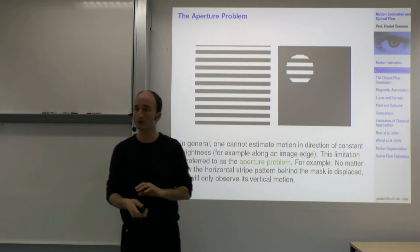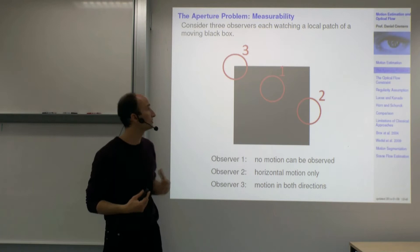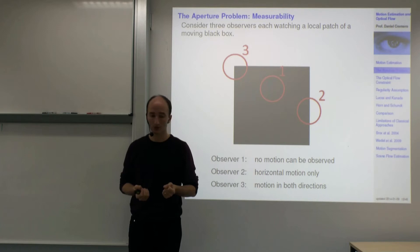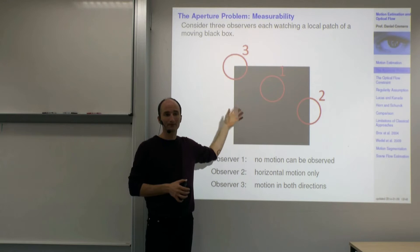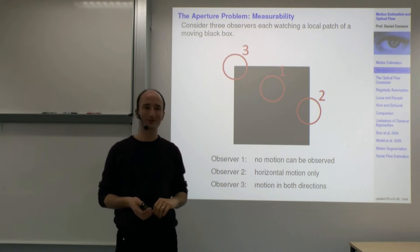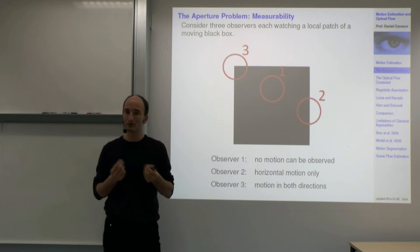More specifically, this problem is called the aperture problem — you can only measure from observation a certain aspect of motion. In the 70s and 80s the world consisted of black squares on white ground, but this simplified cartoon world is useful to get some understanding of what can be measured. Let's assume a square is moving on a white background.